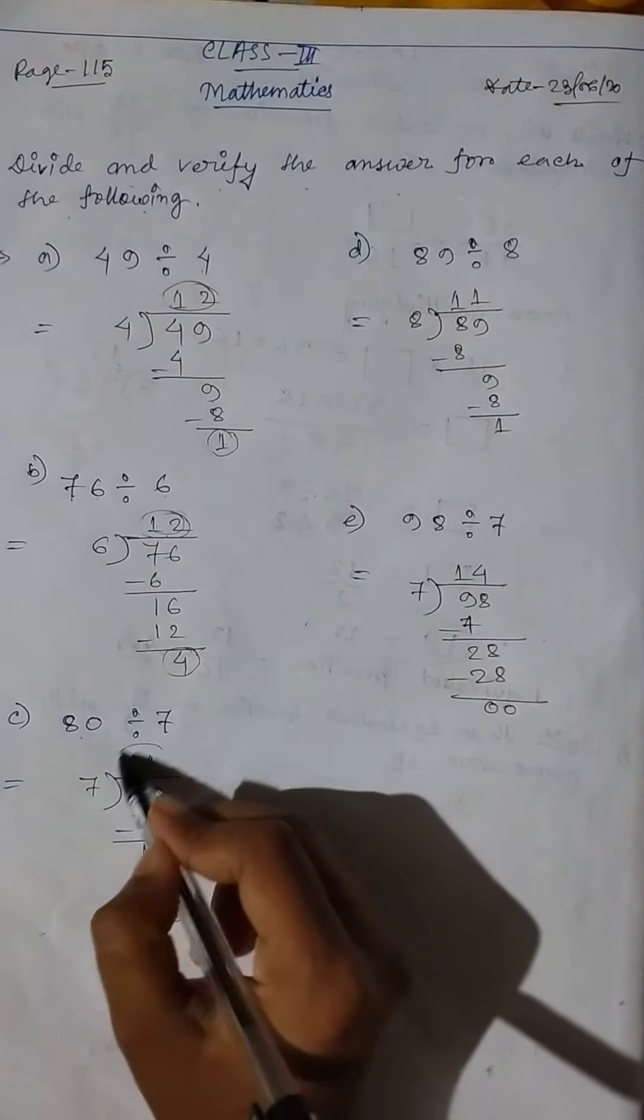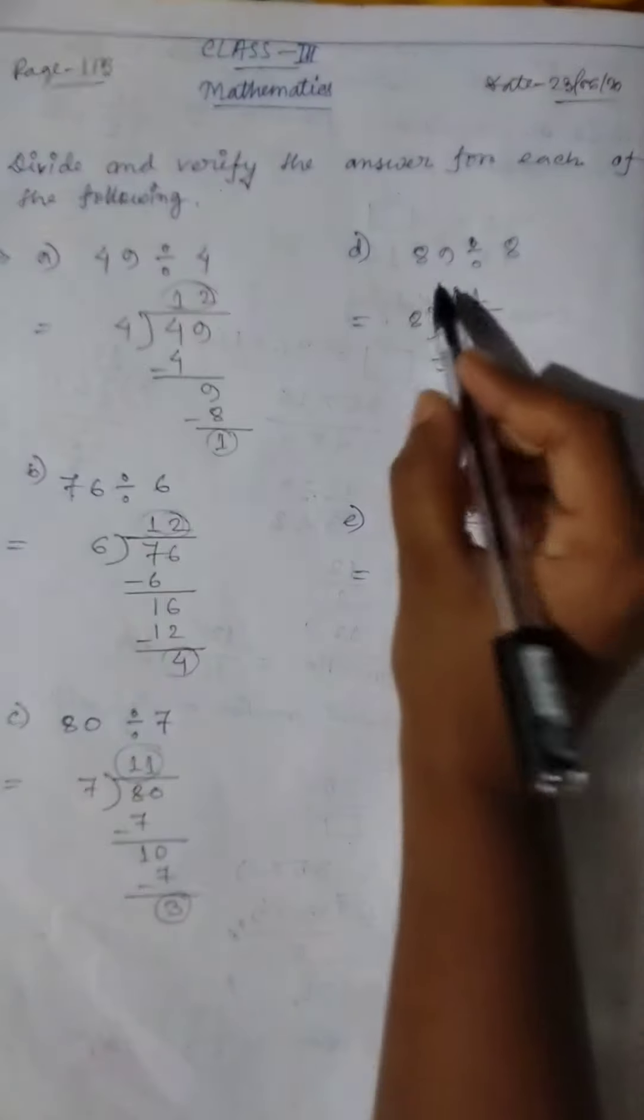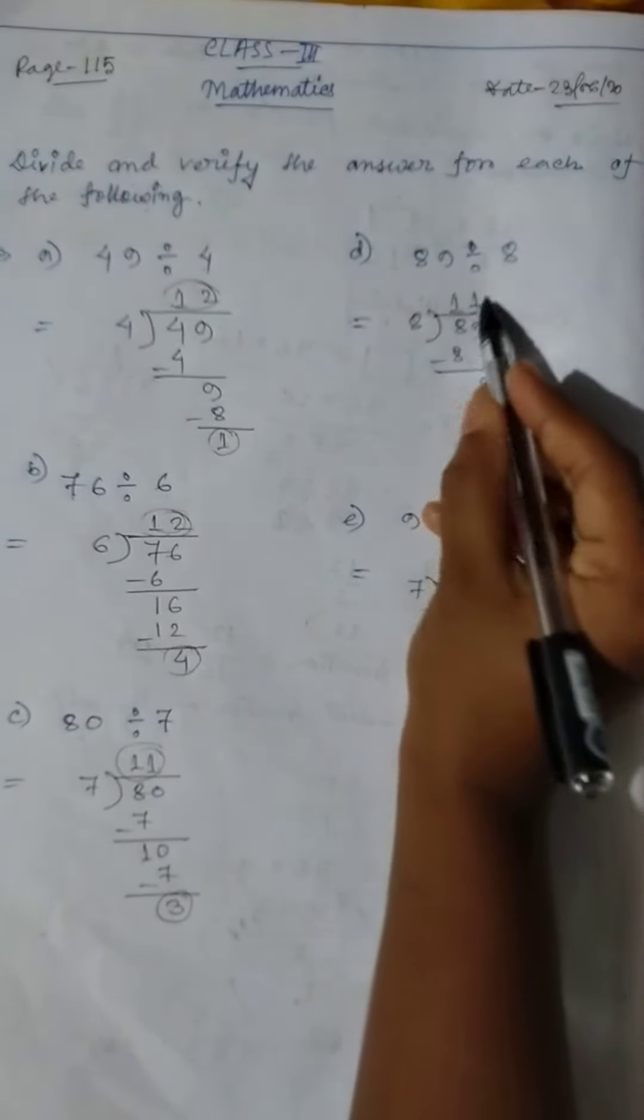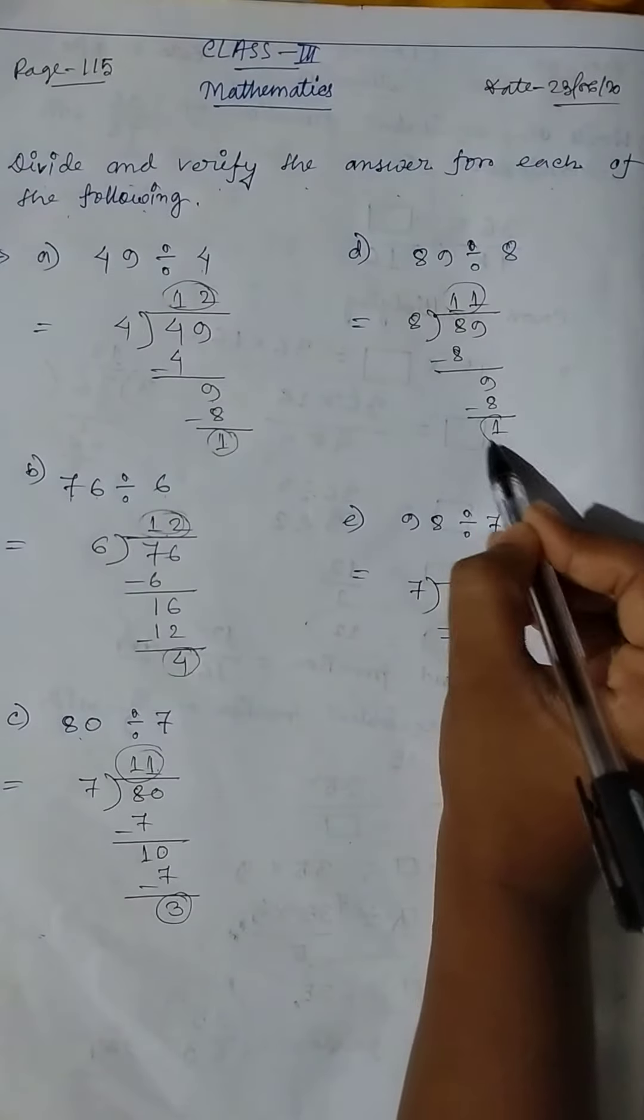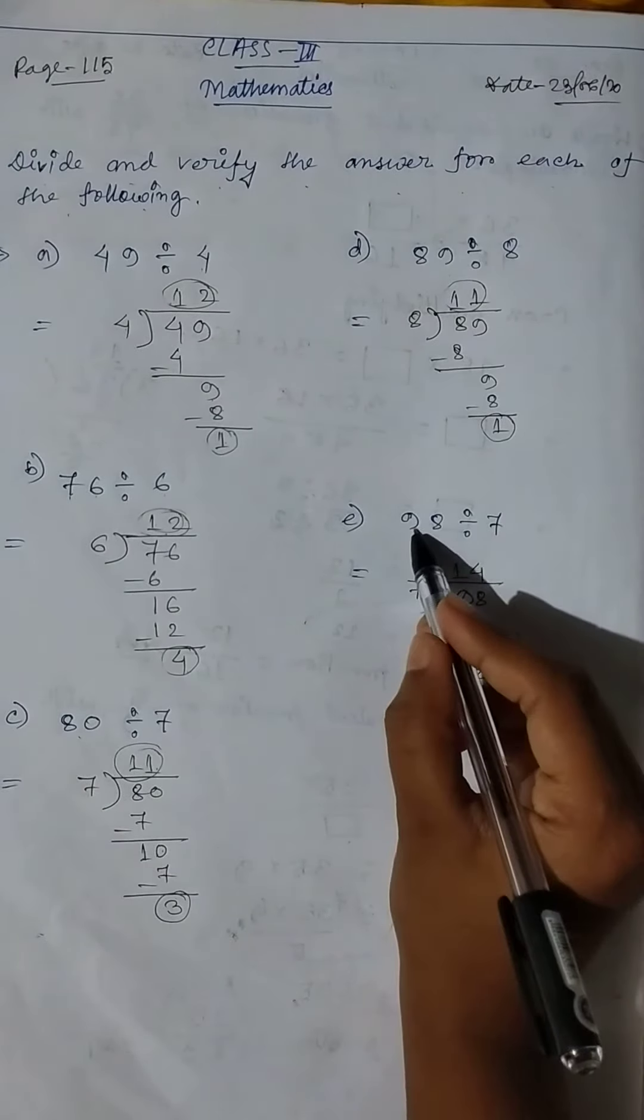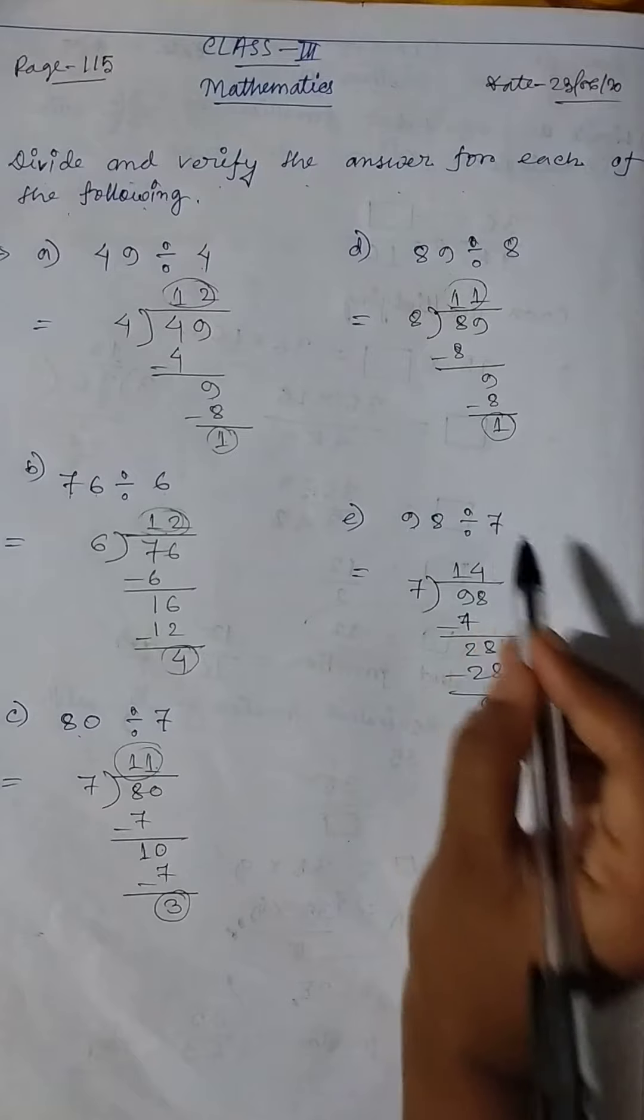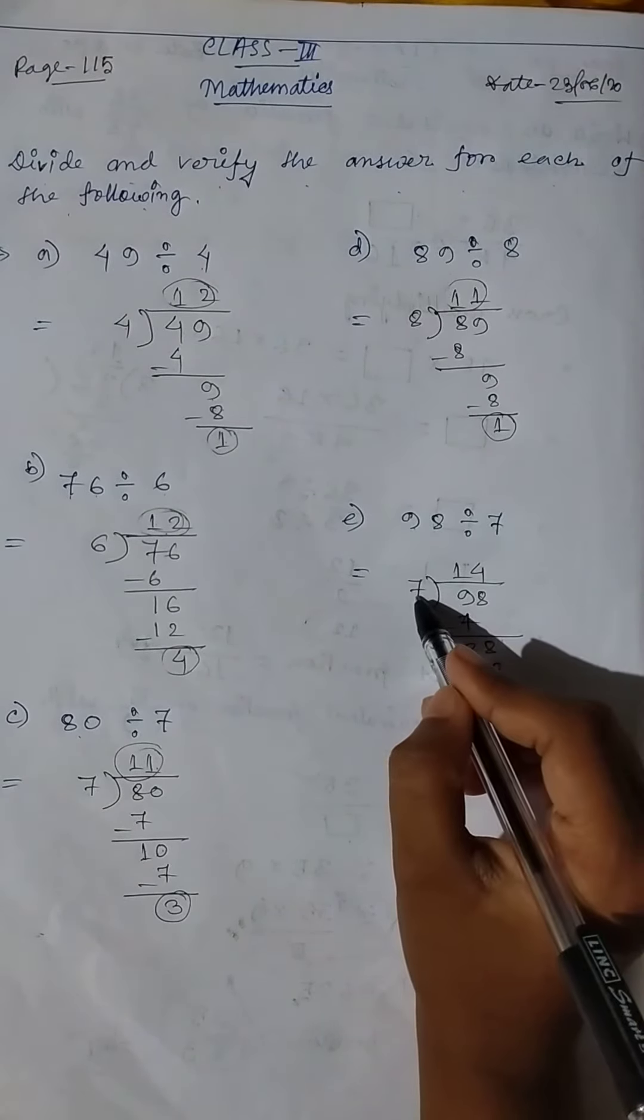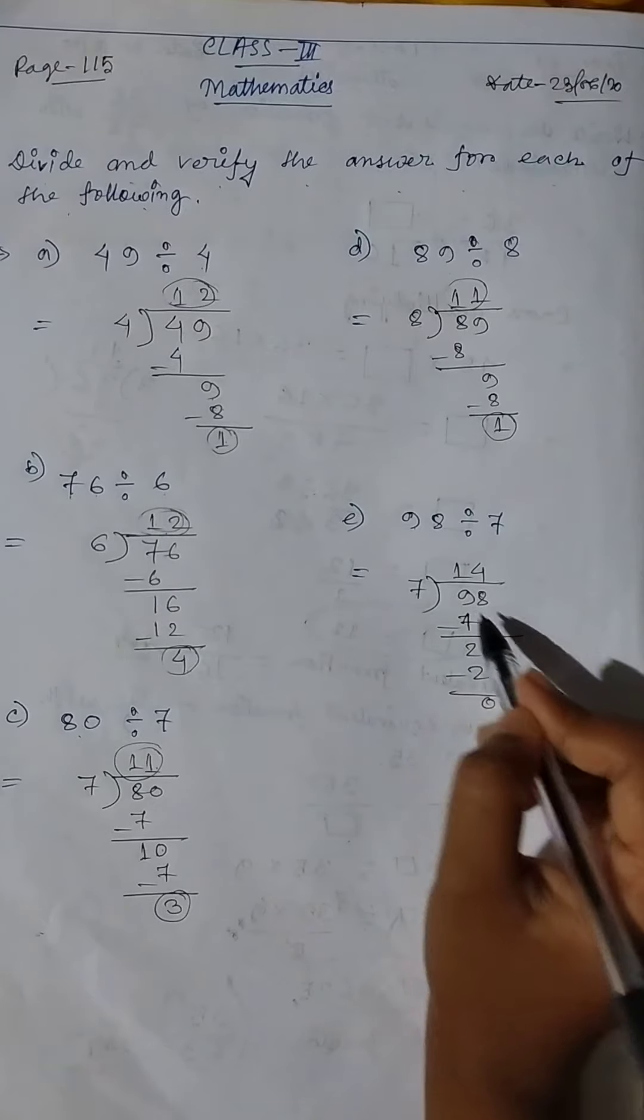Remainder 1. Then 90 divided by 7. 7 ones are 7, 9 minus 7 equals 2...